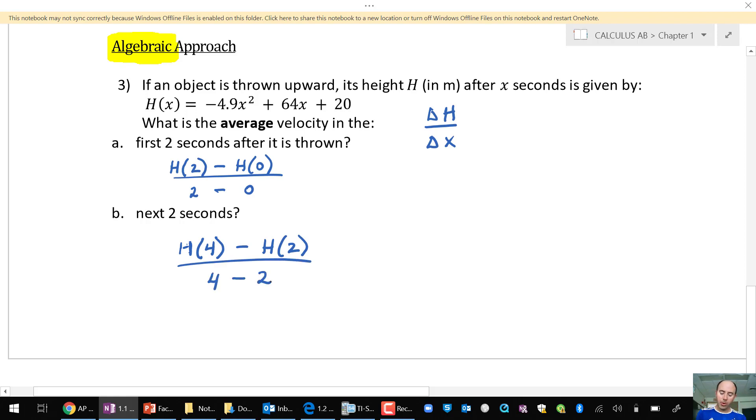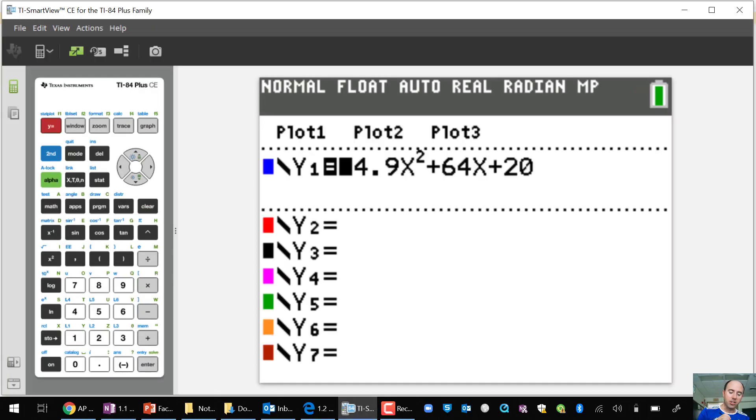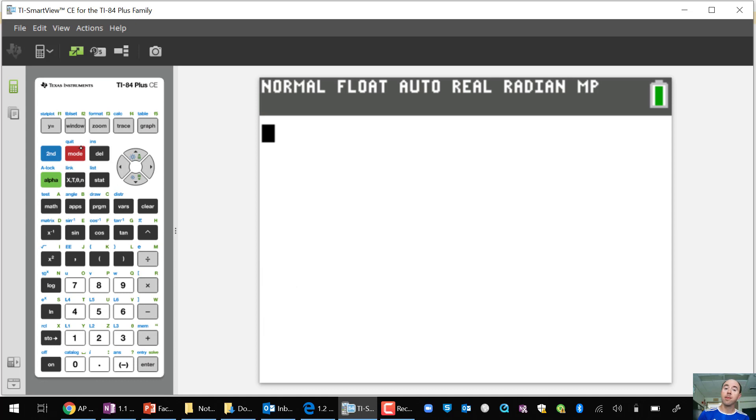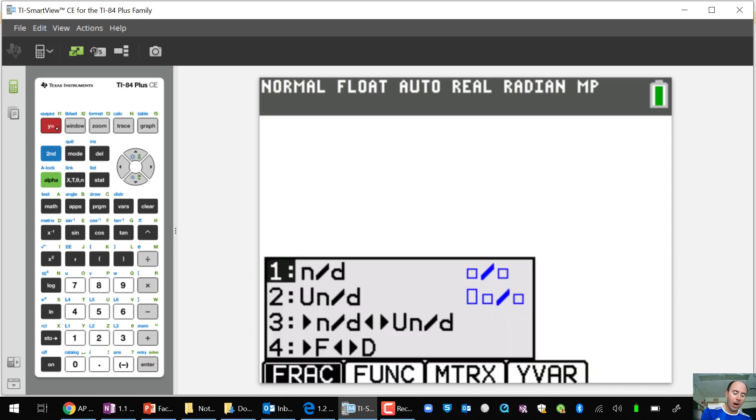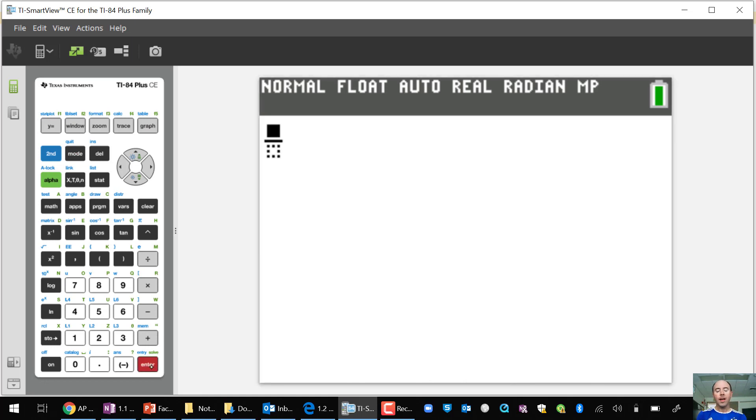Now I'd like to show you a quick shortcut on the calculator to do these difference quotients relatively quickly. If we know what the function is, in this case for the algebraic approach, go ahead and type that function in Y1 of your calculator. In this case, negative 4.9 x squared plus 64 x plus 20. Once that's typed in Y1, we're going to go back to the home screen. So second quit, or second mode, just to go back to the home screen. Press alpha Y equals, and then enter on N slash D, which is option number one. That's just going to give you a little embedded fraction tool in your calculator's home screen.